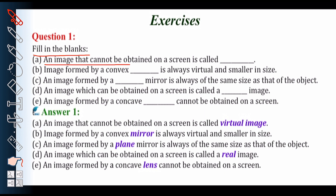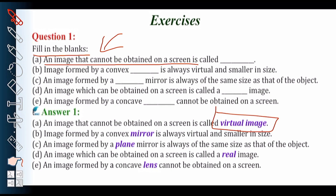First part: an image that cannot be obtained on a screen is called — this is very simple — the image that you can't obtain on the screen is called a virtual image. Virtual image is the opposite of real image. We cannot obtain a virtual image on a screen. So the first answer is virtual image.